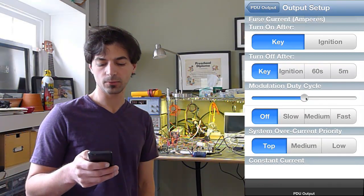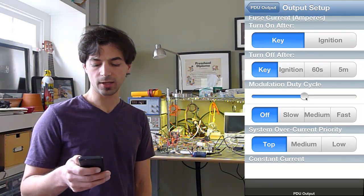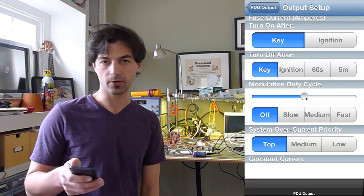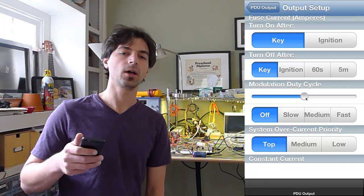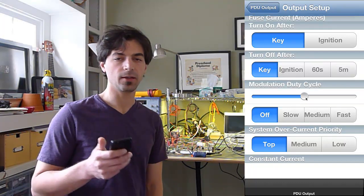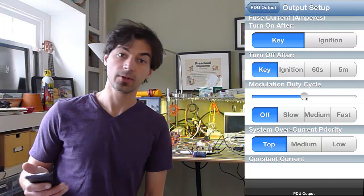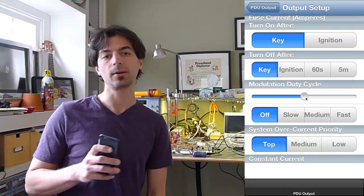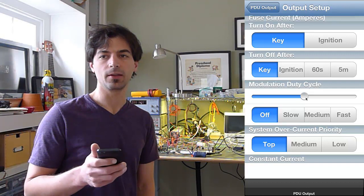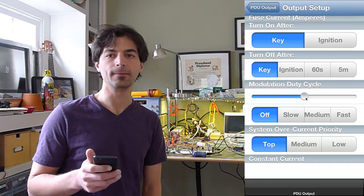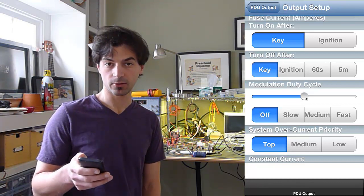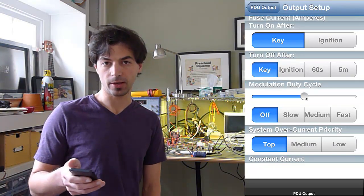And you can also program in modulation as well as a system over current priority. So on another programming screen, you would say this automobile can only handle say 30 amps. The device can handle 100, but your vehicle only can handle 30. So you would set a maximum of 30 amps. And then if you went over that number, it would turn off low priority circuits until you were under that 30 amp number.